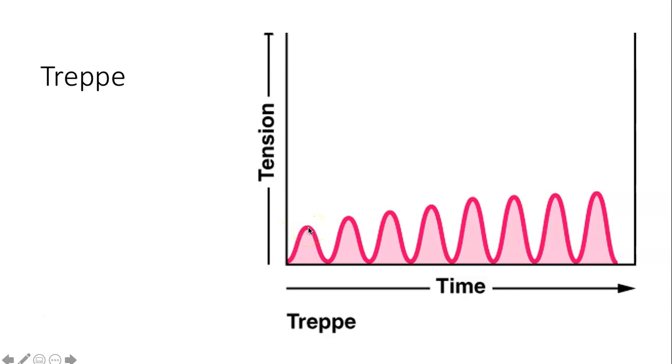Basically, what that means is that the first time you contract a dormant muscle that's been dormant for a while, every subsequent time you contract it, it will be slightly stronger.